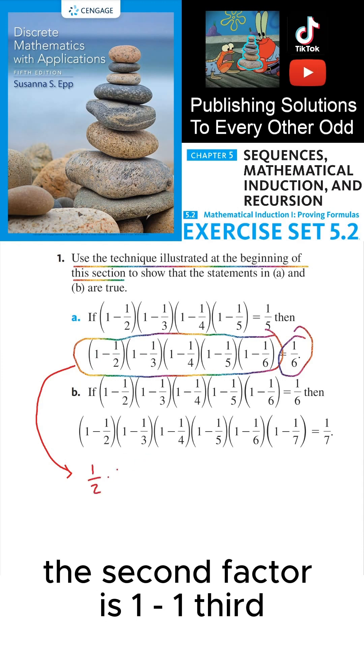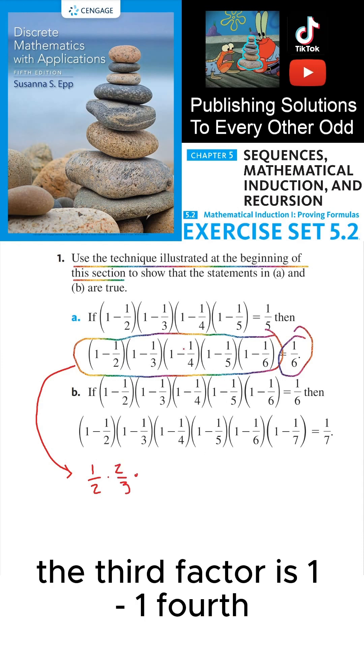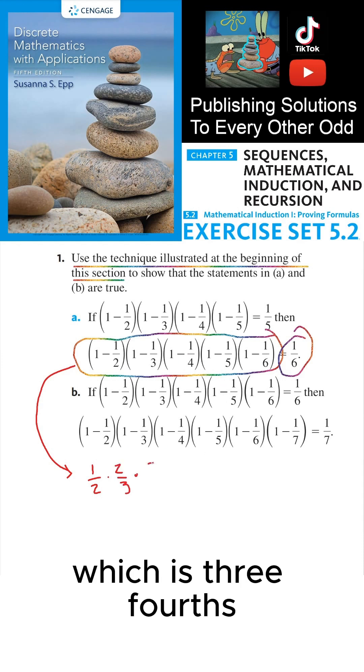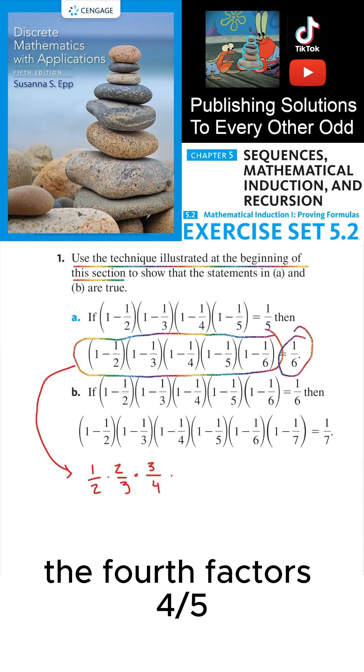The second factor is 1 minus 1/3, which is 2/3. The third factor is 1 minus 1/4, which is 3/4. The fourth factor is 4/5, and the last factor is 5/6.